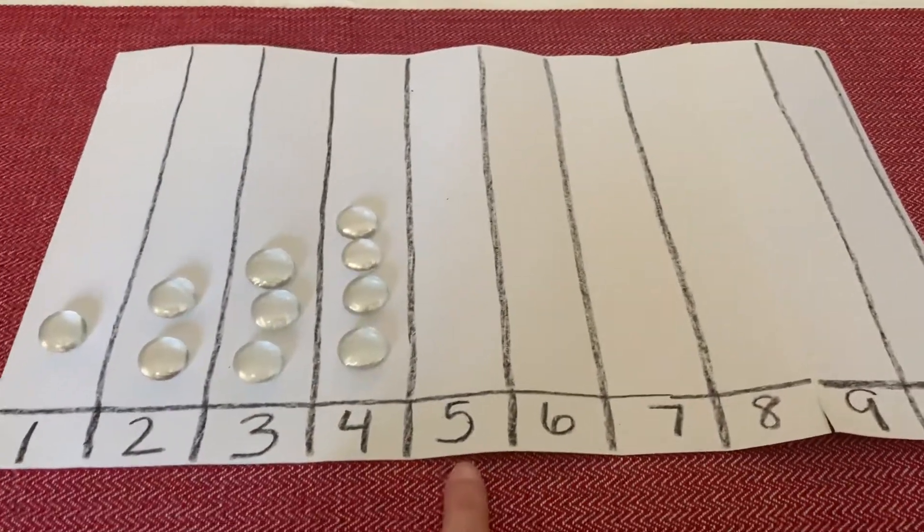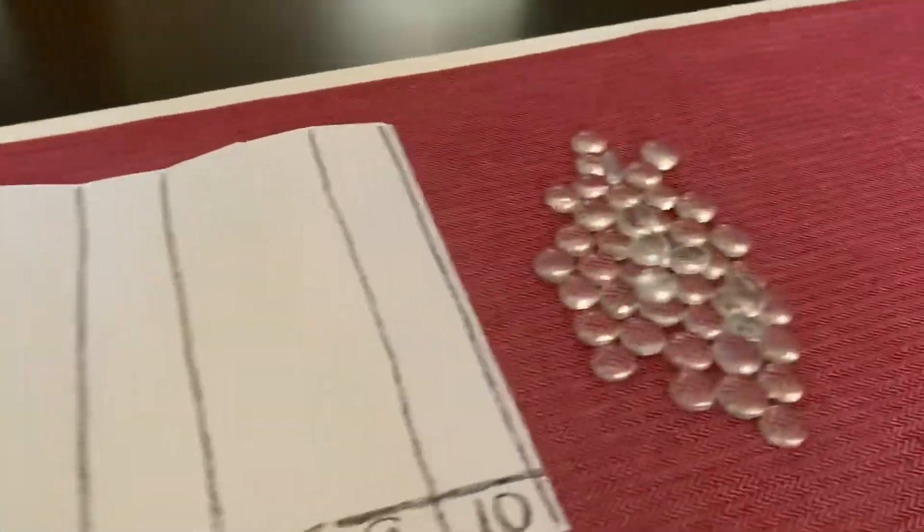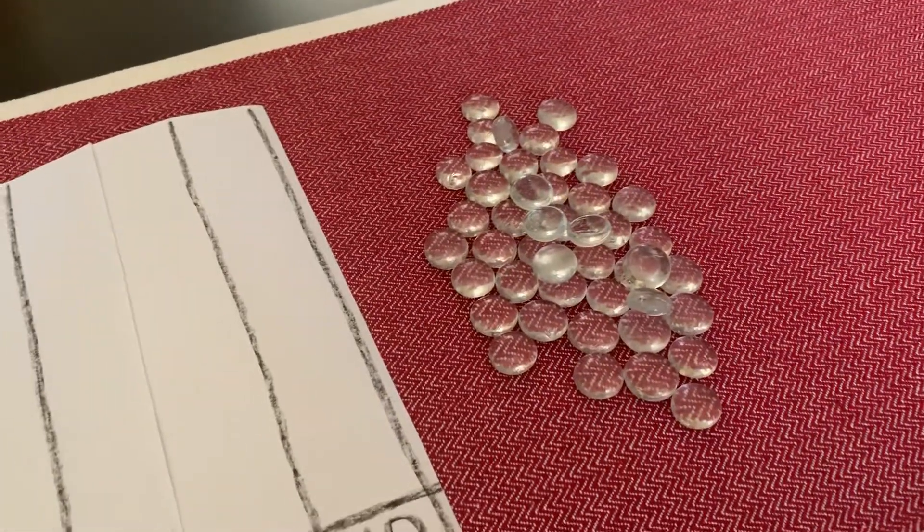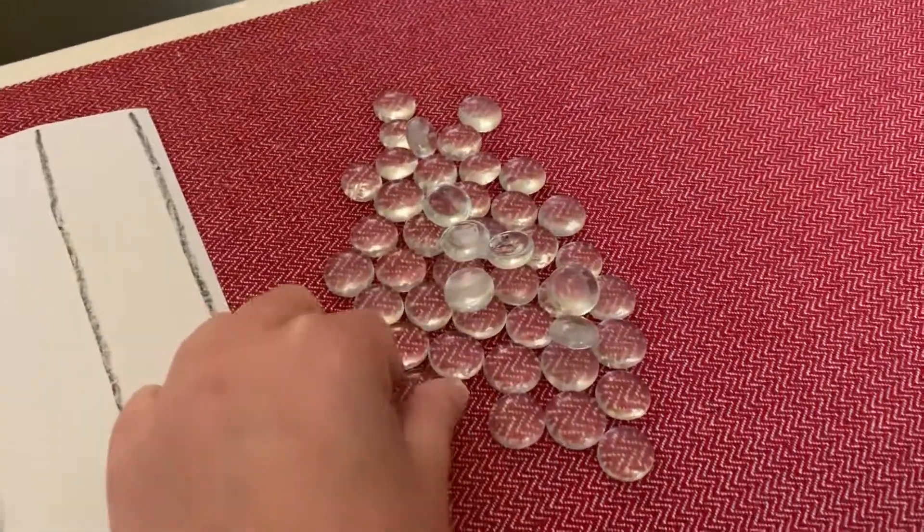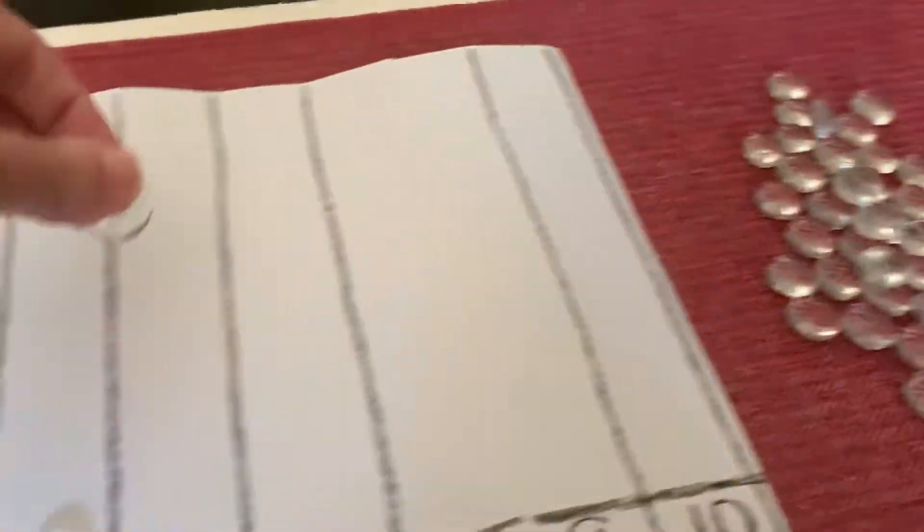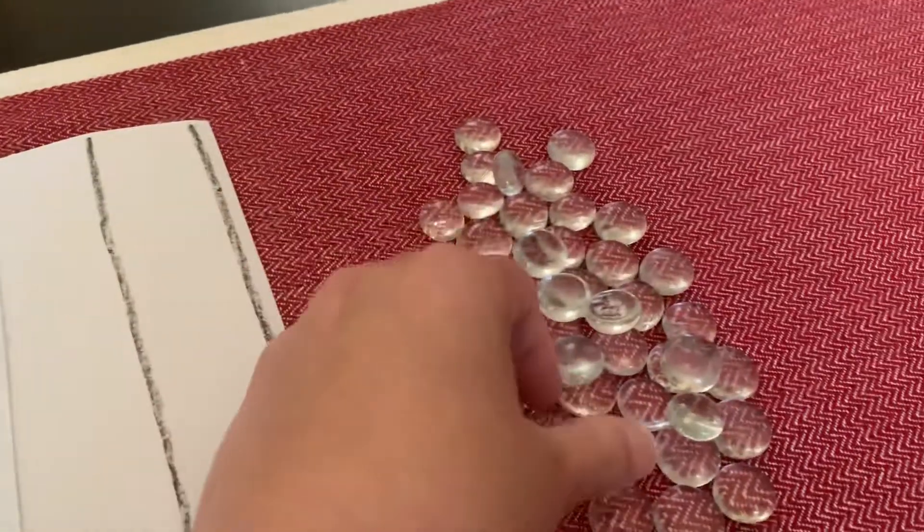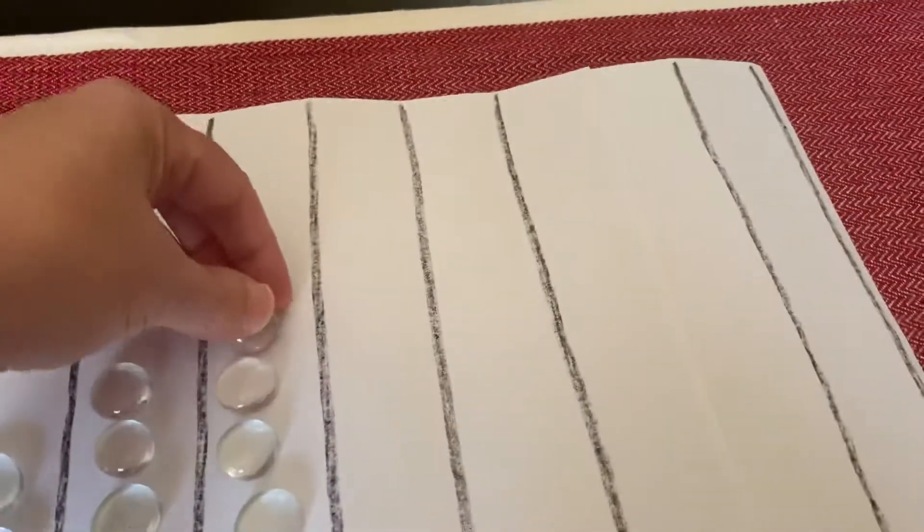All right boys and girls, what's this number? The number 5. All right, so let's come over here and count 5 jewels. Ready? 1, 2, 3, 4, 5.